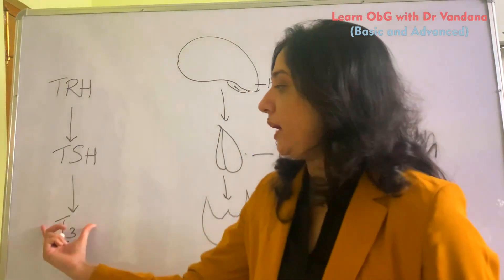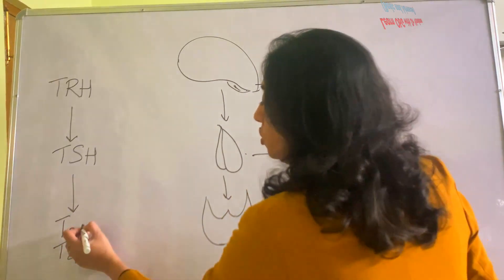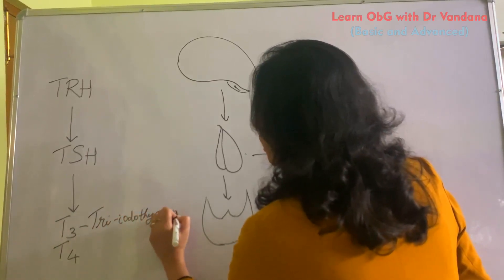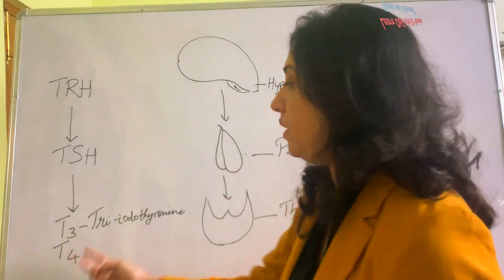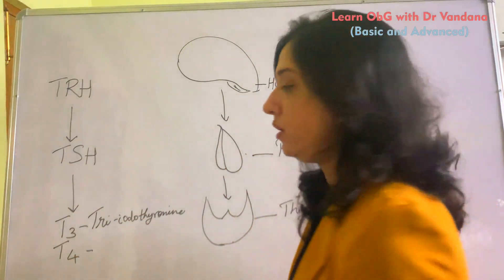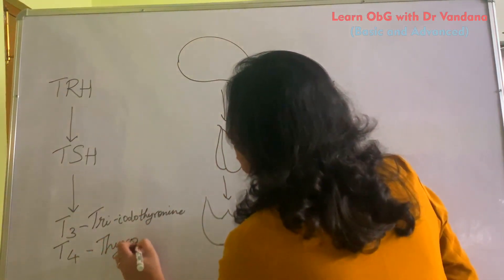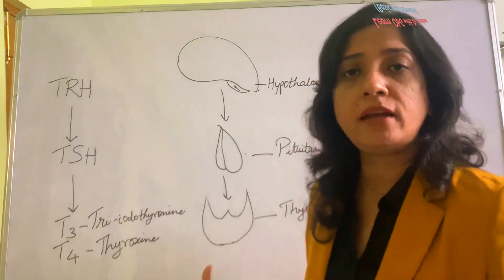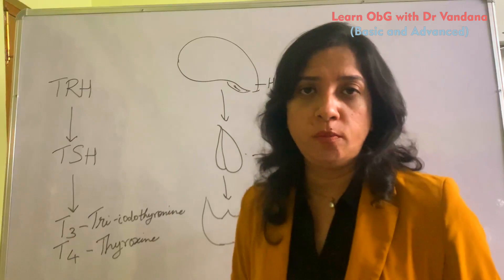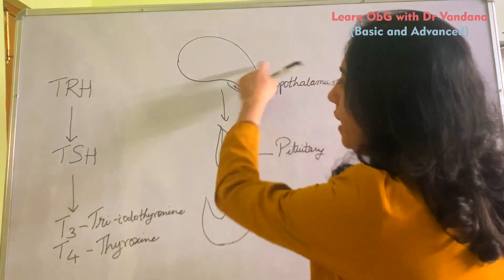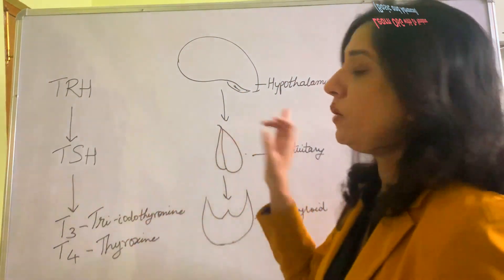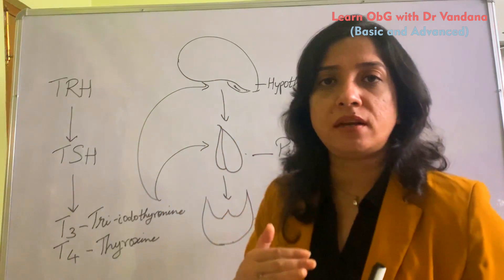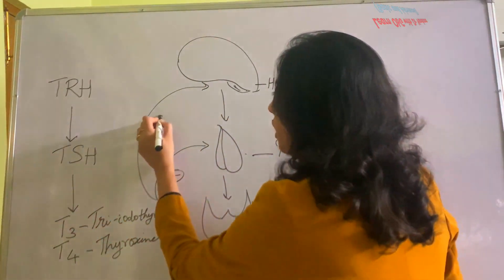When there is iodine deficiency, production of these hormones is affected. T4 is commonly called the thyroxin hormone. When the thyroid gland produces these two hormones, they play a very important role in the metabolism of the human body. When they are released, they exert a negative feedback on the hypothalamus and the pituitary, suppressing their own secretion depending on the levels of the hormone in the body.